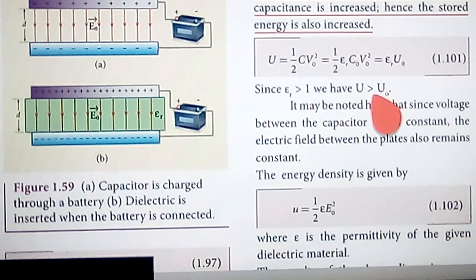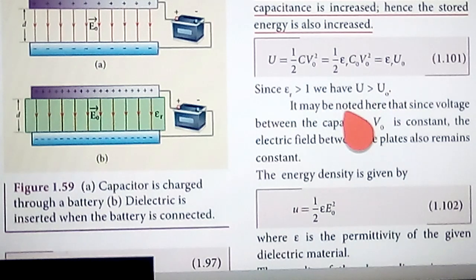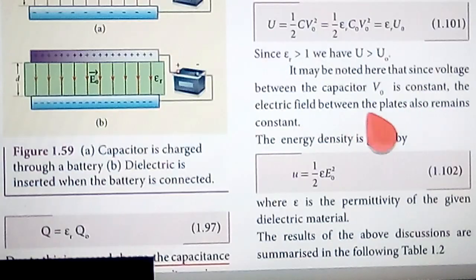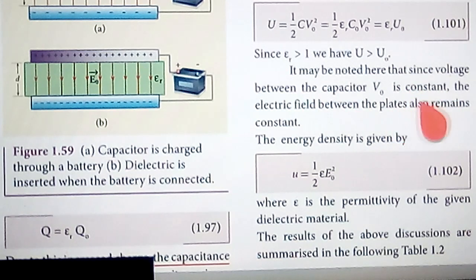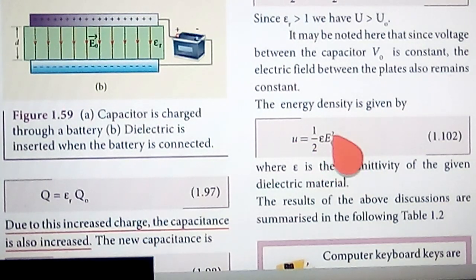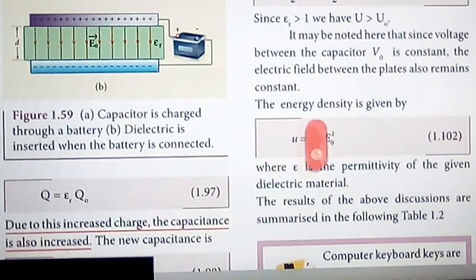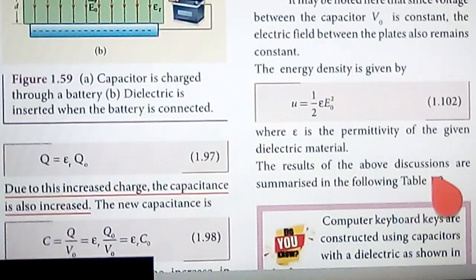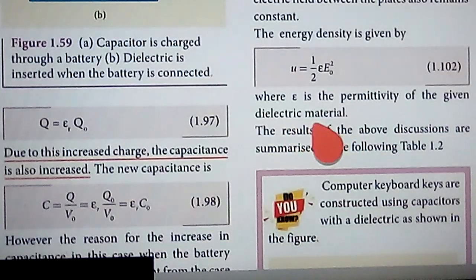Since the relative permittivity εr is greater than one, we have U greater than U₀. Since the voltage V₀ is constant, the electric field between the plates also remains constant. The energy density is given by U = ½ · ε · E², which is equation 1.102, where ε is the permittivity of the given dielectric material.